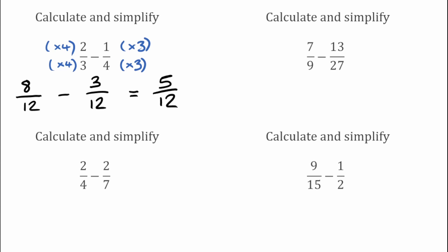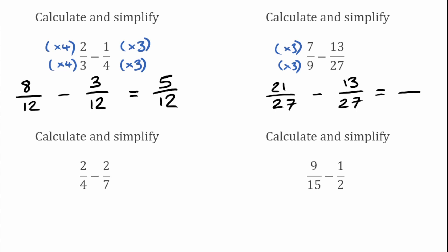For our next example we've got 7 over 9 take away 13 over 27. The lowest common multiple of 9 and 27 is actually 27, so we want two fractions over 27. For the first fraction, we'd have to multiply the 9 by 3 to get 27, so we do the same to the top to keep it equivalent: 7 times 3 is 21. The fraction on the right was already over 27, so we keep that as 13 over 27. Subtracting the numerators: 21 take away 13 leaves us with 8, so our final answer is 8 over 27.